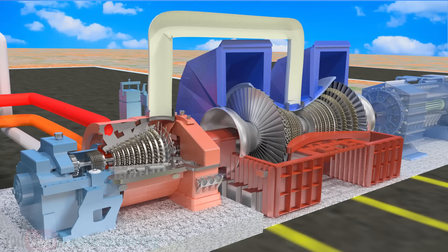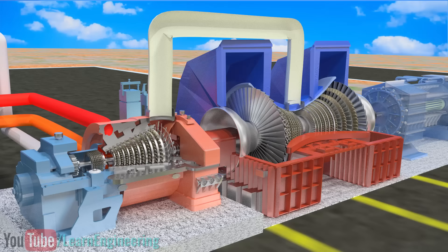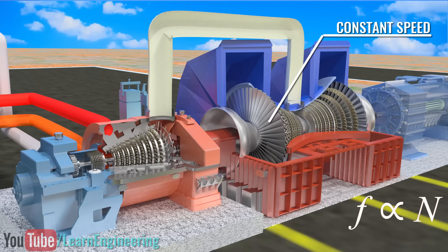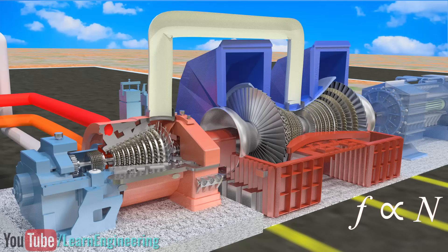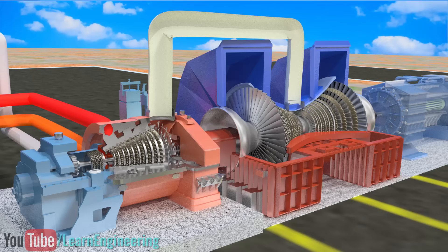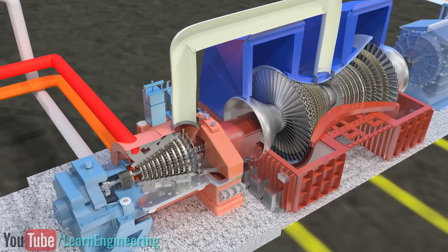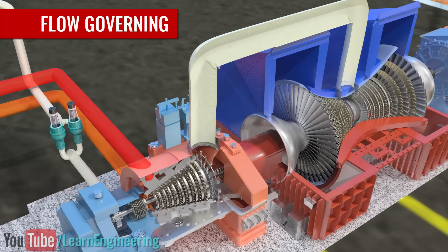One challenging problem in power plant operation is to keep the speed of the steam turbine constant. This is important since frequency of the electricity produced is directly proportional to the generator speed. However, depending on the load or power demand, the steam turbine speed will vary. To keep the steam turbine speed constant, a steam flow governing mechanism is used.